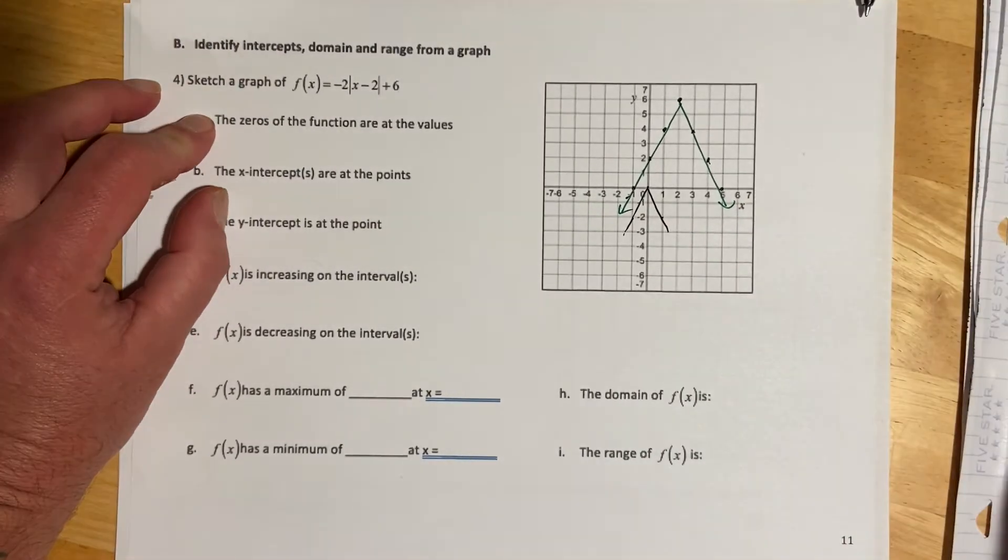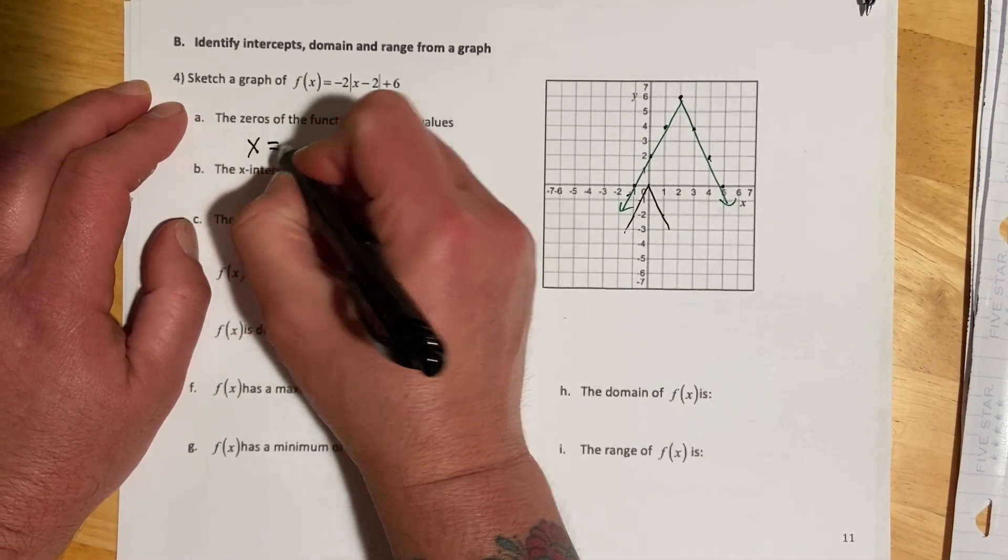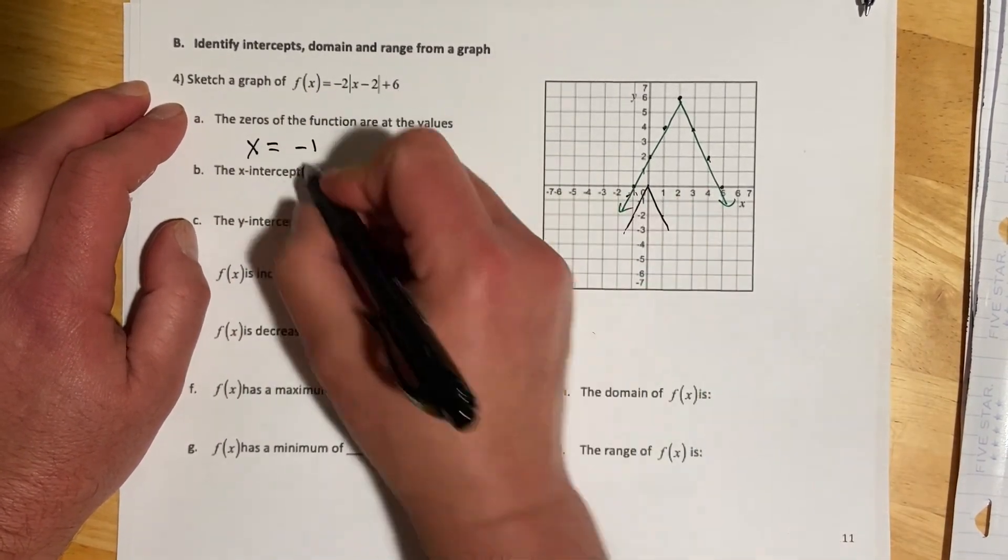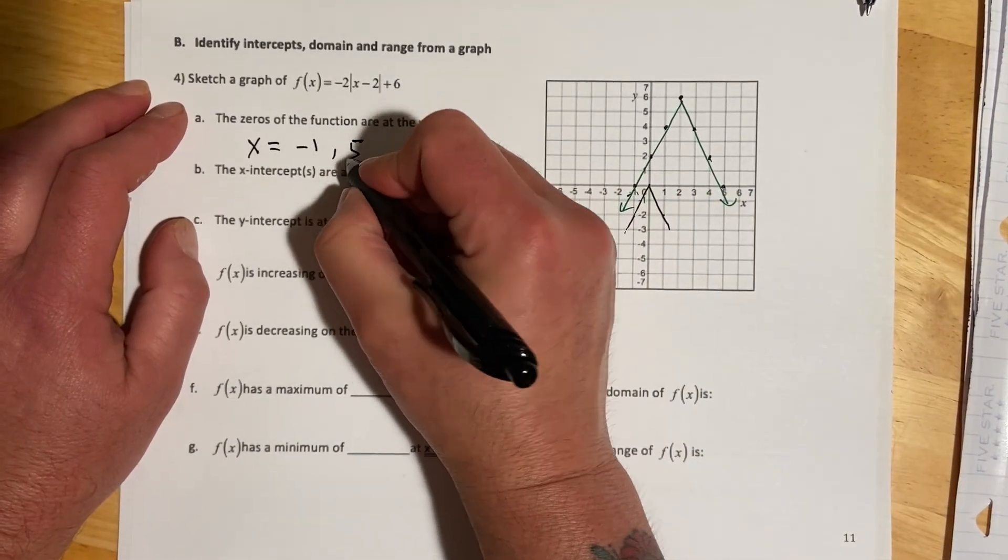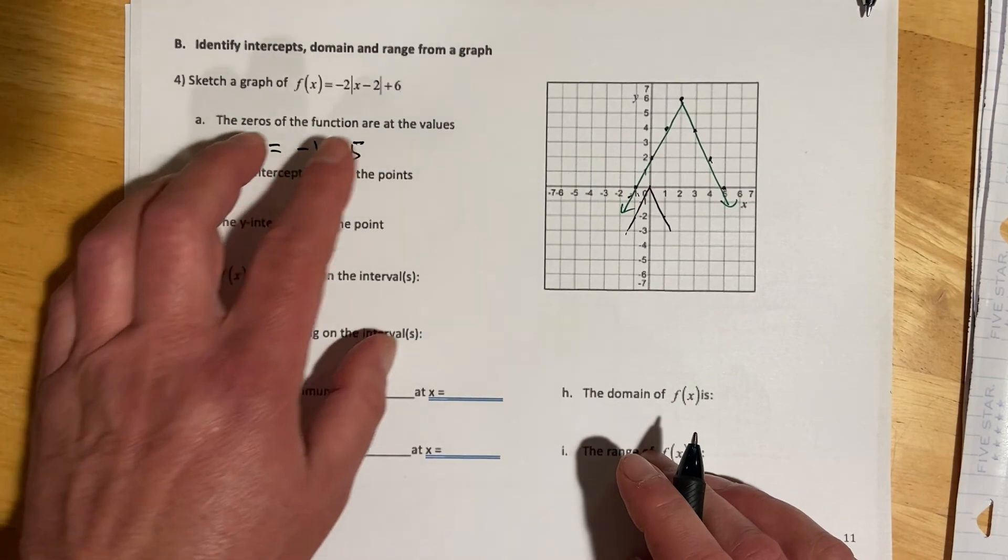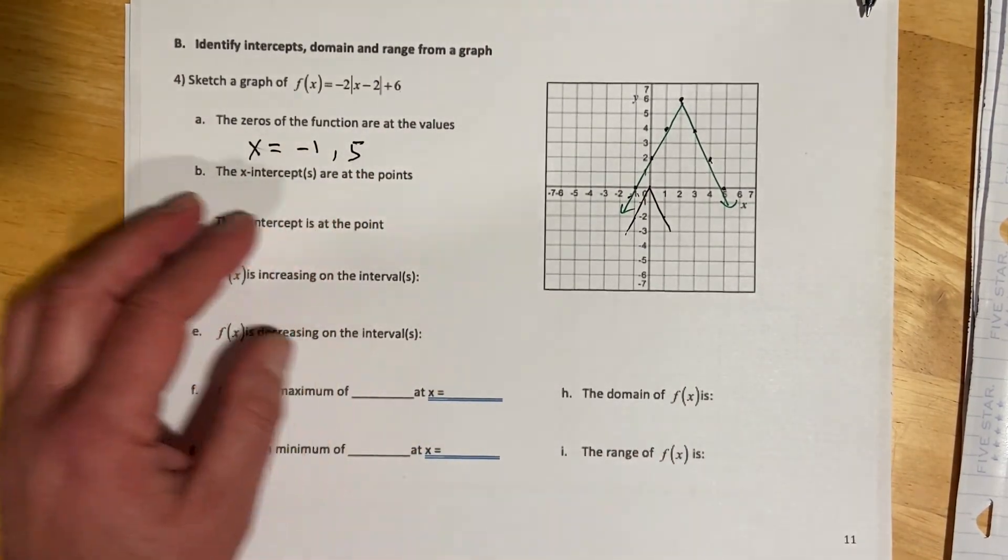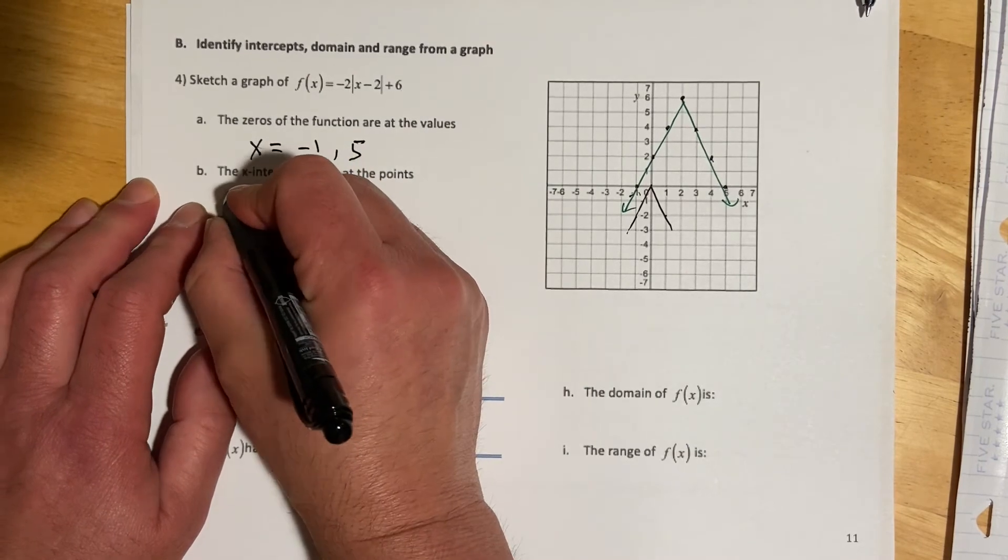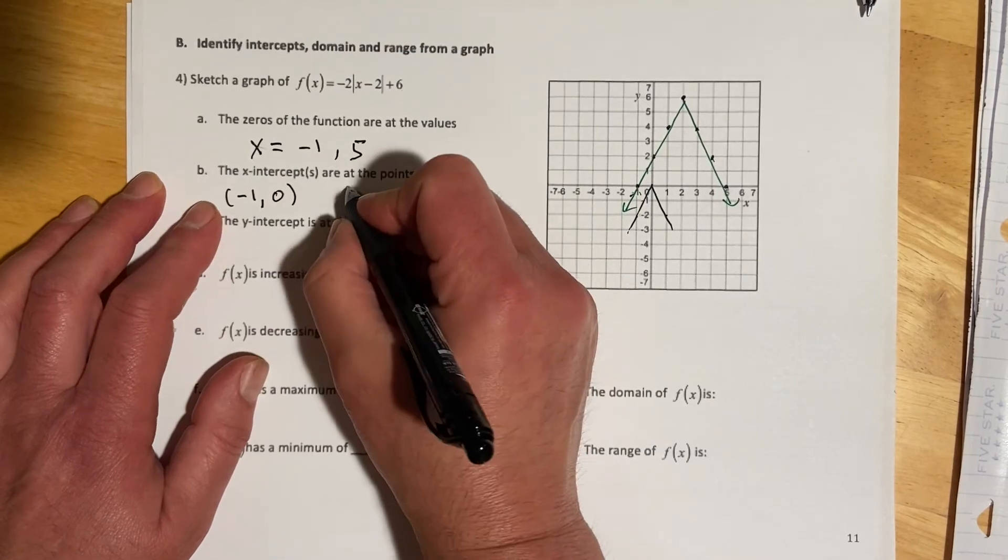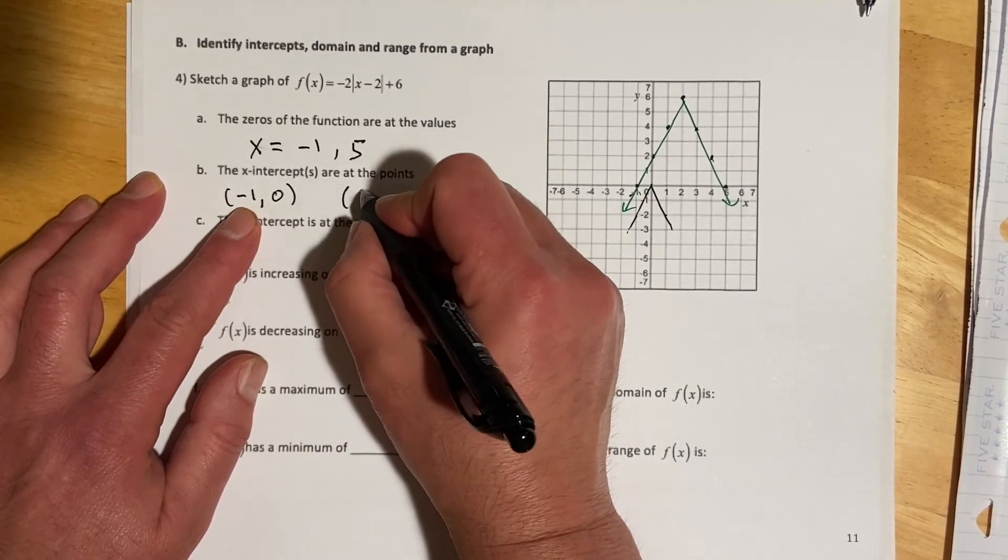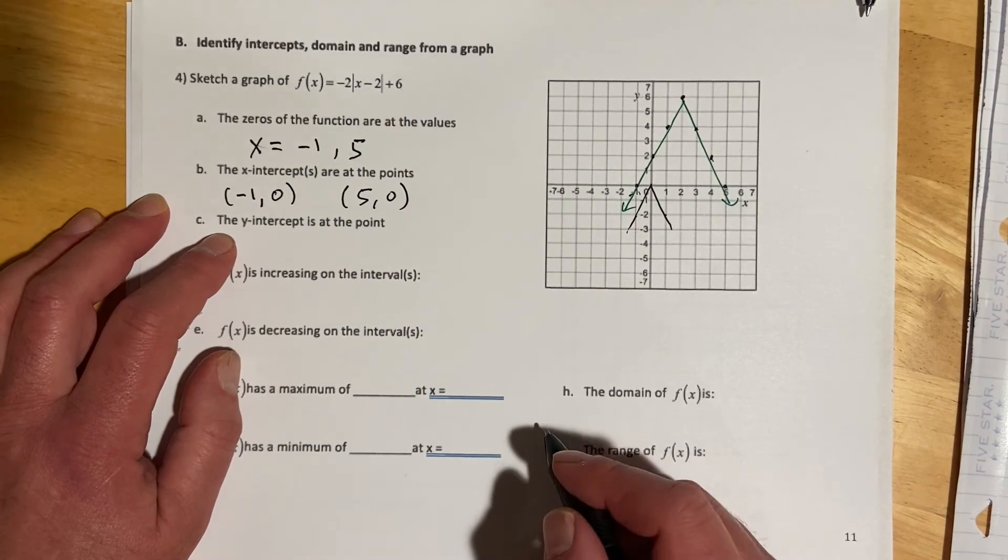The zeros of the function are at the values x equals negative 1 and 5. When they're saying the zeros, they're looking for a list. The x-intercepts are the exact same things, but now they're looking for ordered pairs: (-1, 0) and (5, 0).